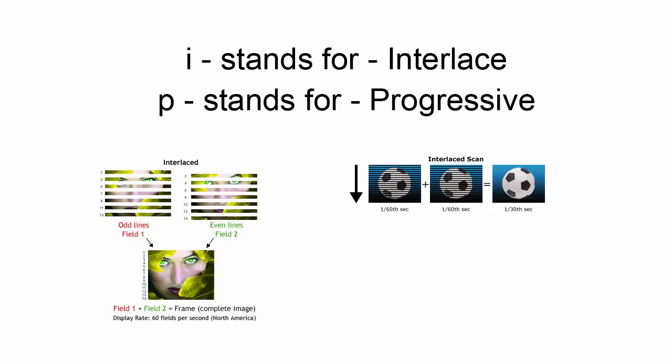A little more complicated to grasp. I stands for interlace, and P stands for progressive. Both these terms are referring to how the image is displayed on the screen.